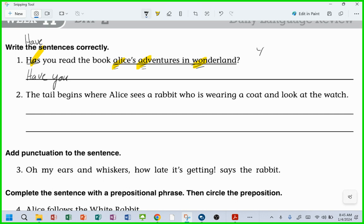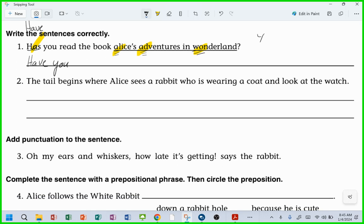You ready? The tail begins where Alice sees a rabbit who is wearing a coat and look at the watch. Oh, that's a mess. It is a mess, you guys. I see a homophone mix-up. Who can spot the homophone mix-up?